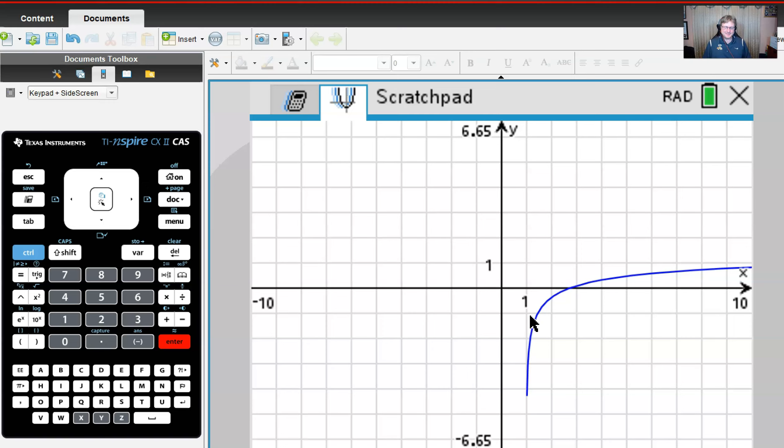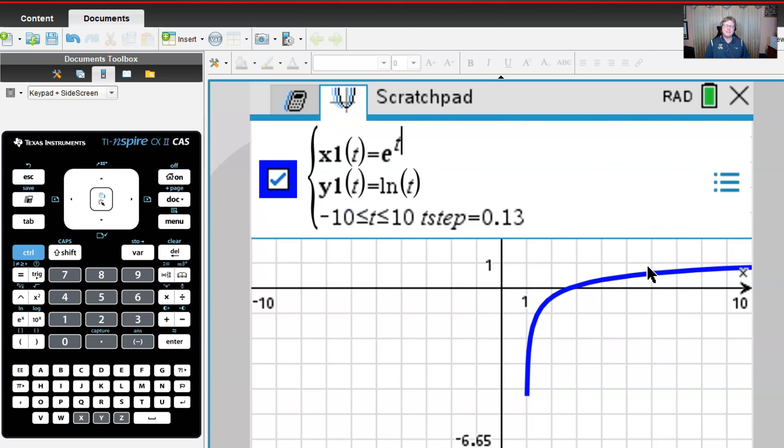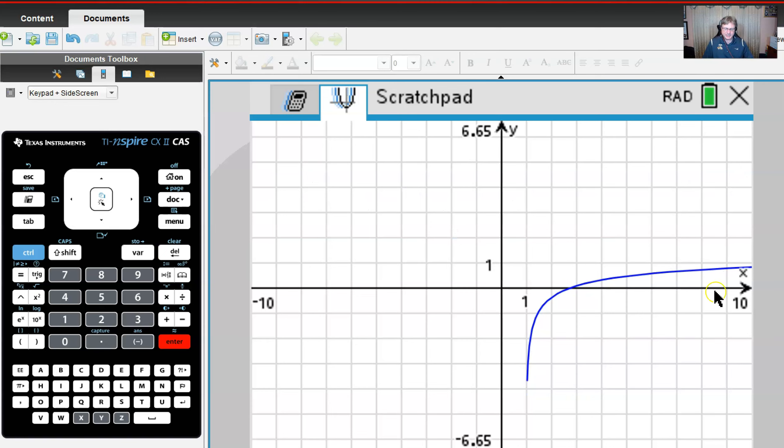If we played around with it a little bit, maybe we allowed this t to go beyond zero. Let's see if this makes any difference. That was unexpected. Maybe there are sometimes just small anomalies with the graphing calculator. Even if I change this t step to less than 0.13, it doesn't really change much.